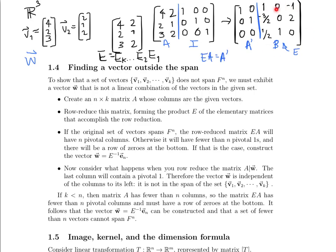We have matrix E that row reduces A. Clearly what we're missing is a pivotal one down in the bottom row. So what we're looking for is a vector w whose row reduced form gives us that third pivotal one. We need some vector such that when we attach it onto A and E multiplies on the left, this column of A gives 1 0 0, this column of A gives 0 1 0, and we need a third column that gives 0 0 1 when E multiplies it on the left.